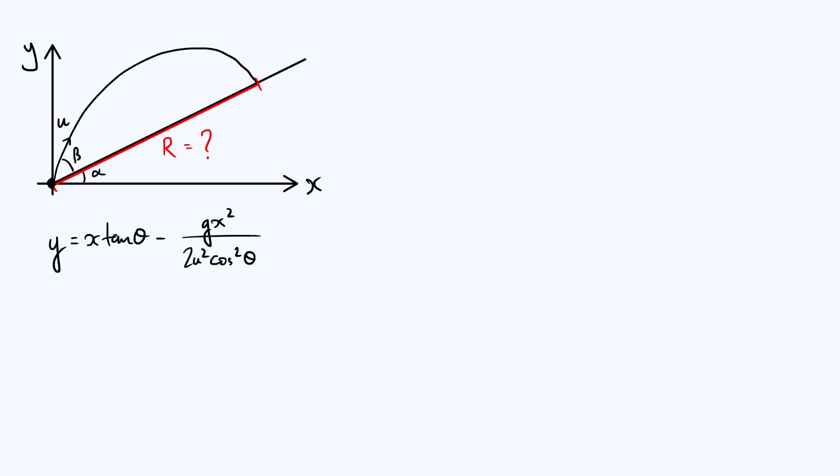Now this equation that's just appeared gives the shape of the trajectory of our projectile. There's one quantity in that equation that I need to define on the diagram, which is the angle theta. Theta is basically just the angle that the initial velocity makes with the x-axis, so it's that angle there. You can see straight away that theta is alpha plus beta.